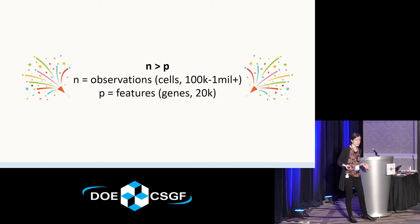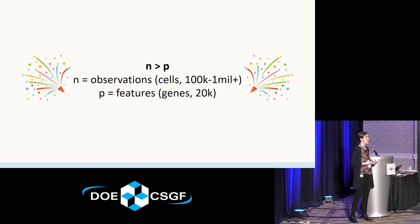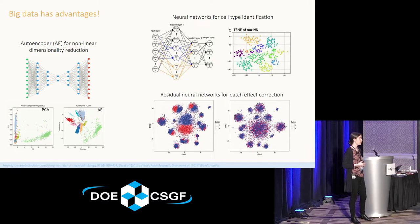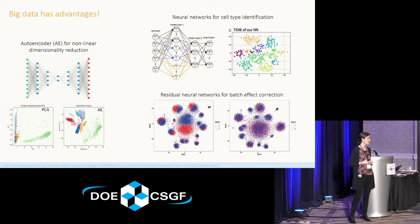One nice thing with these larger datasets is that we're finally in a situation where we have more samples than we have features. With about 20,000 genes as features, working on RNA-seq for a long time, you're lucky if you have more than a dozen samples most of the time. Now we're finally in the case where we have way more samples than features, which opens up the door for additional types of analyses. There have been people exploring things like autoencoders for dimensionality reduction, neural networks for cell type identification, and batch effect correction. There are a lot of interesting applications becoming more feasible, though this area is still very much in its nascency.